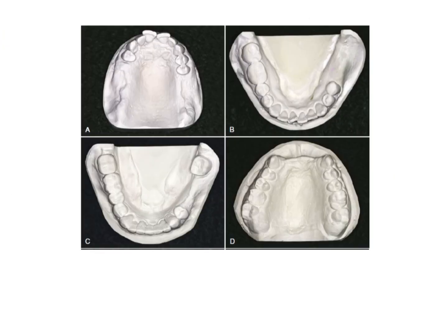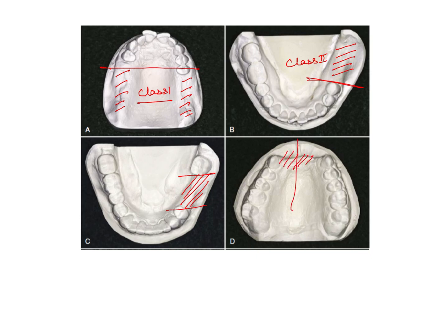So, coming to Kennedy's classification, this is class 1, where you have bilateral edentulous spaces posterior to the remaining natural teeth. Class 2, unilateral edentulous area posterior to the remaining natural teeth. Class 3 is a single unilateral edentulous area surrounded by anterior and posterior teeth and class 4 is a single bilateral edentulous area crossing the midline.